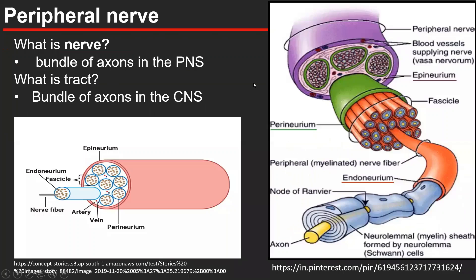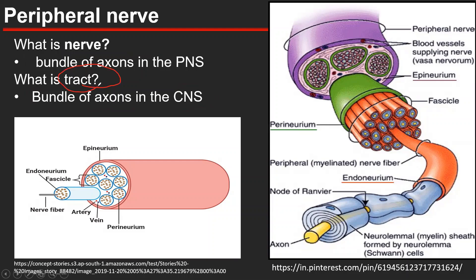A peripheral nerve is a bundle of axons in the peripheral nervous system. Bundles of axons in the peripheral nervous system are called nerves. In the same way, bundles of axons in the CNS are called a tract.